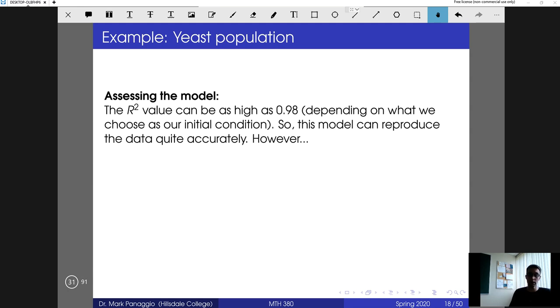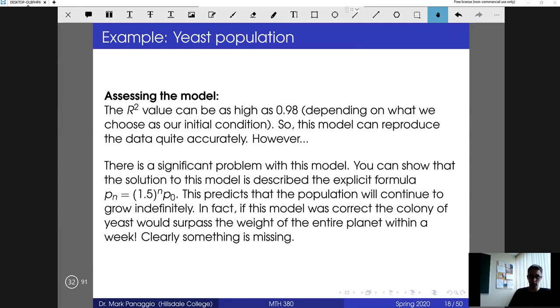When you might say that based on the data we have, this is a pretty good model. On the other hand, it's a good idea when you propose a model to think about some of the implications because you may find that the model does have some limitations. If you actually find an explicit formula, you'll see that the population after n steps is going to be 1.5 raised to the n times the initial population. This predicts that the population will grow faster and faster. If you project that forward in time, the population will diverge. Within a week the population of the yeast in a small petri dish will somehow surpass the weight of the entire planet. So something is missing. This is actually not a great model, at least not for large values of n.